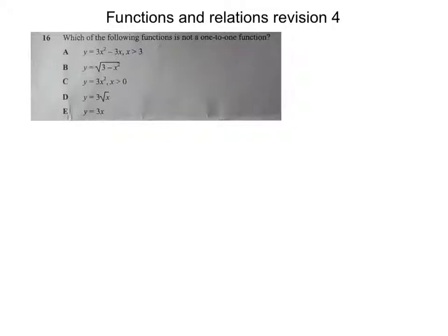Welcome to the fourth installment of the functions and relations revision. This particular question, question 16 from the sheet: which of the following functions is not a one-to-one function? The first one is a quadratic graph with domain restricted to x greater than 3. The second is y equals the square root of 3 minus x squared. C: y equals 3x squared. D: y equals 3 root x. And E: y equals 3x.